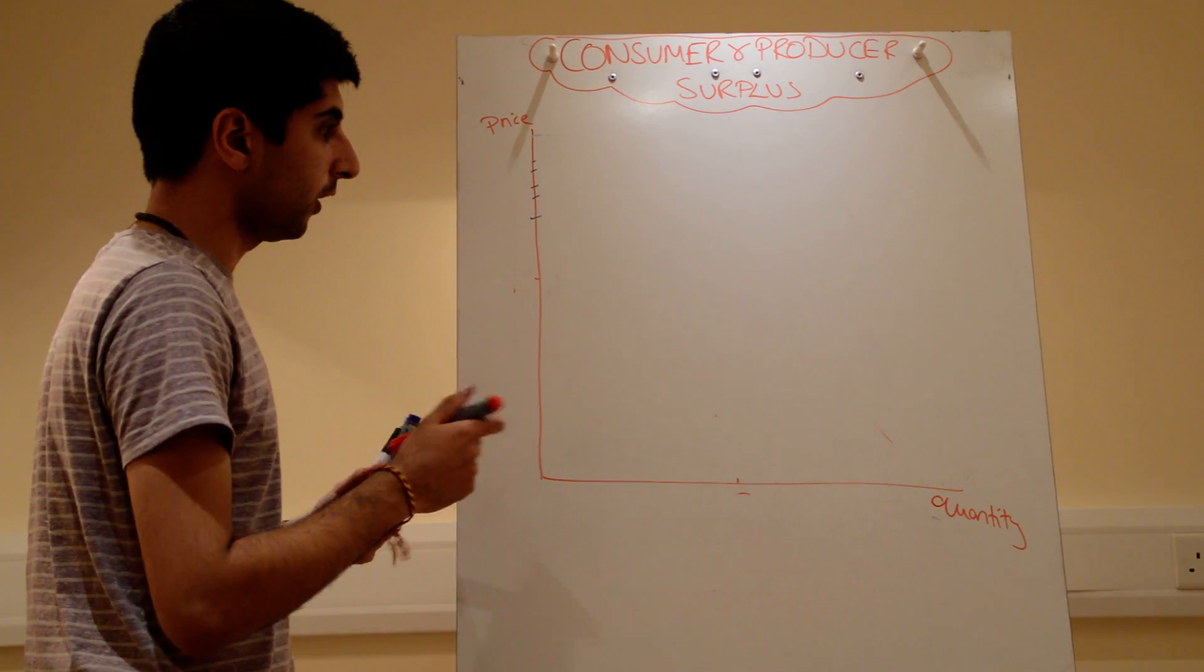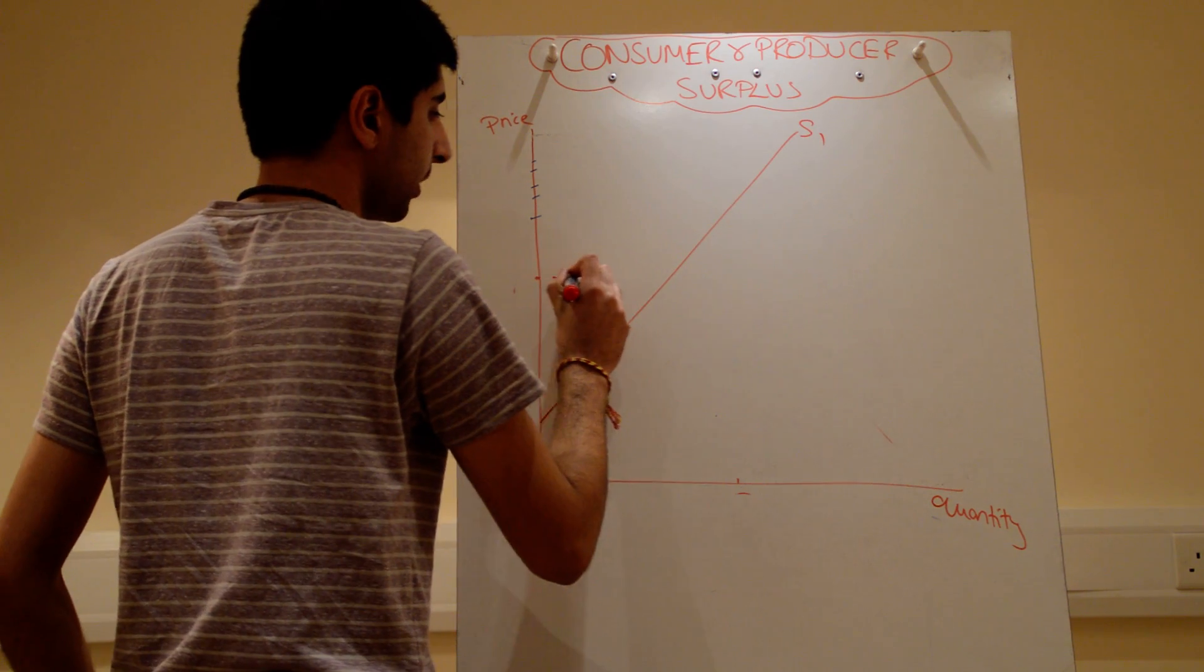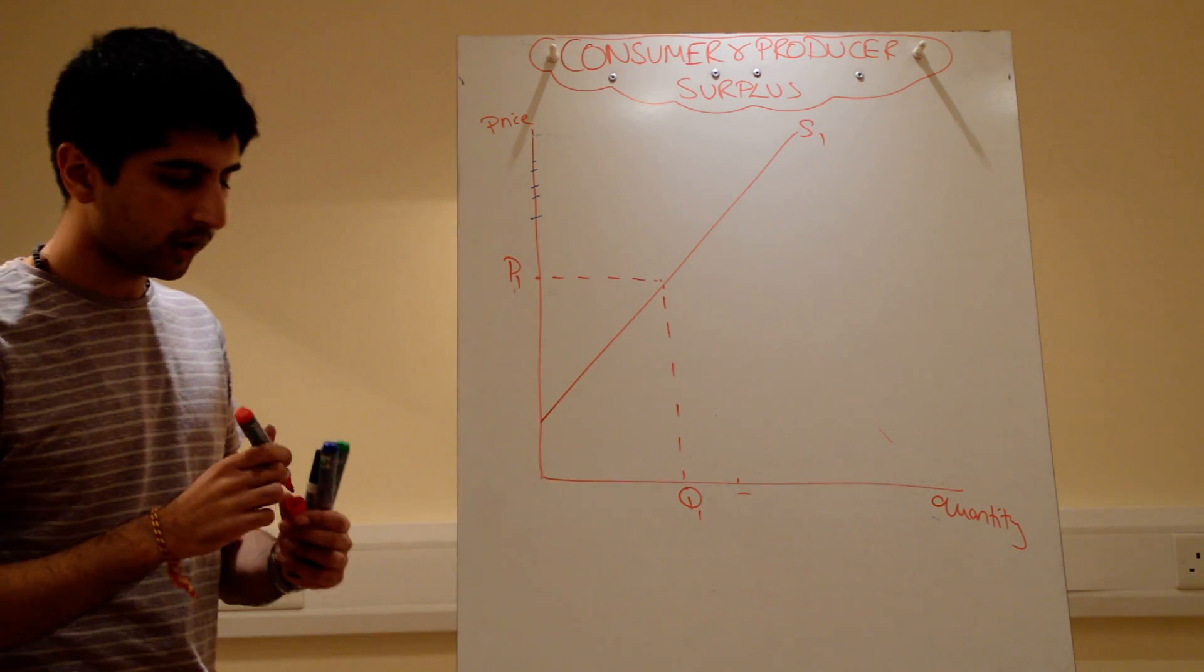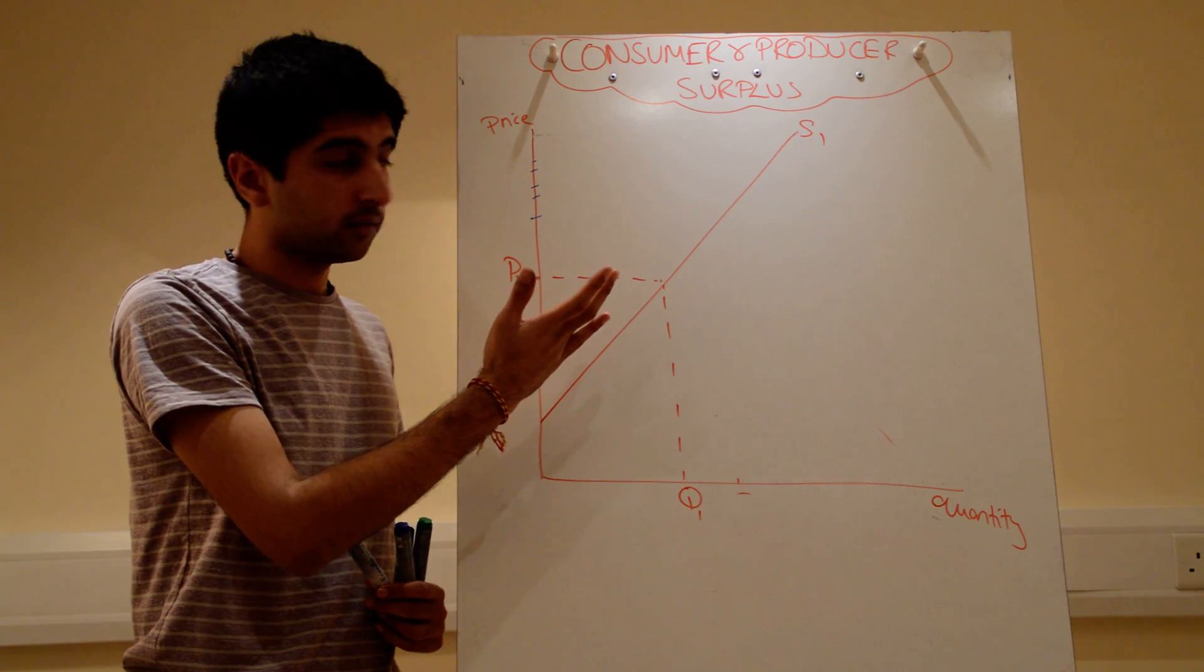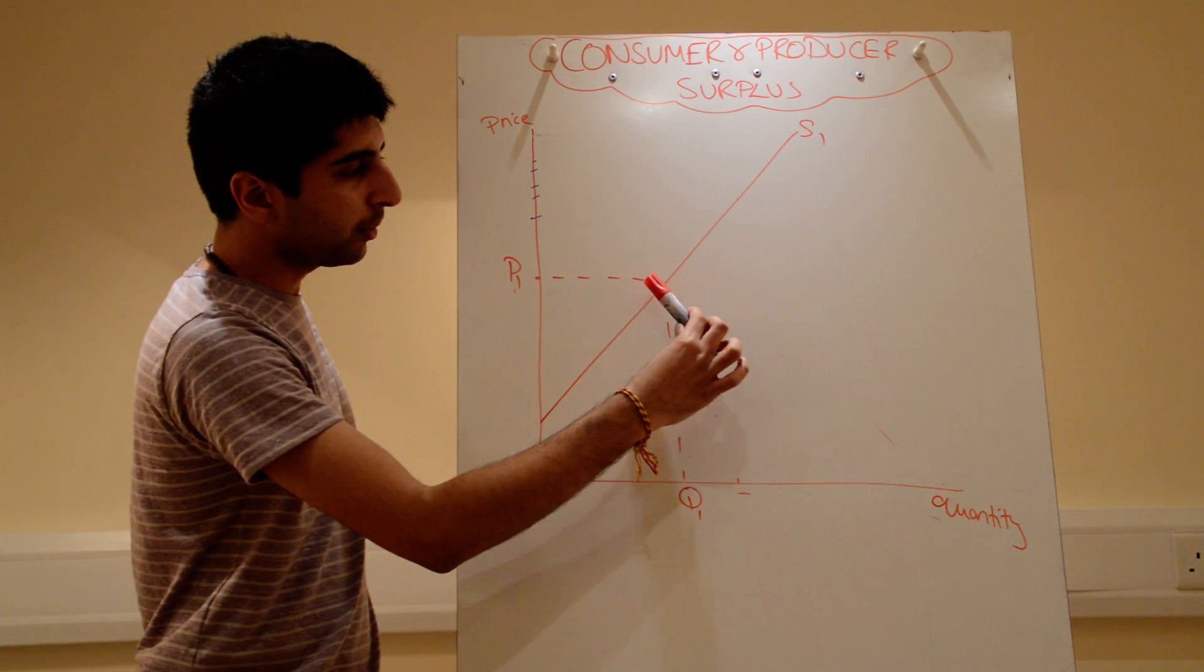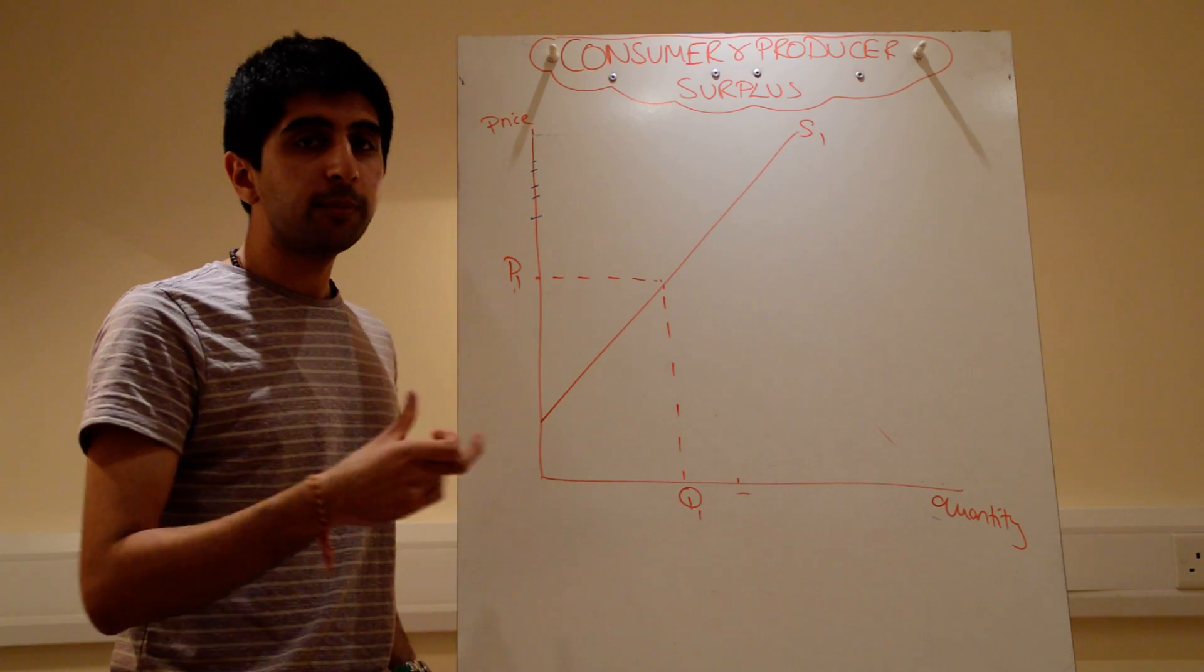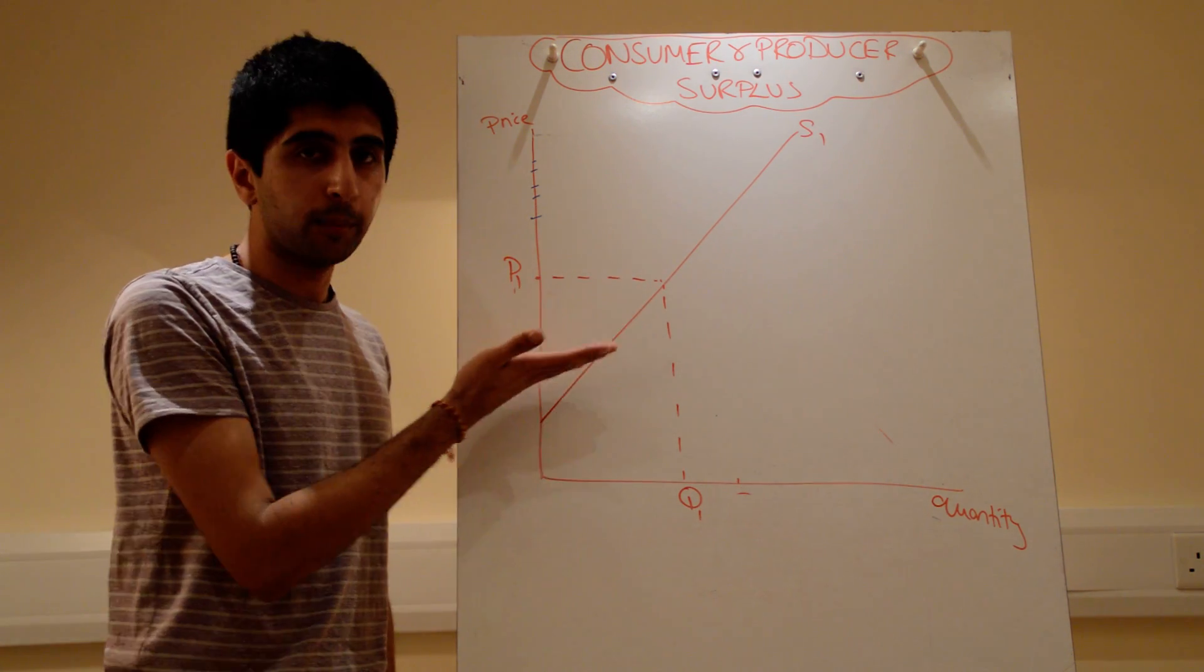So let's draw a supply curve. That looks like that, upward-sloping supply curve. Again, let's pick a price, and let's call that price P1. Quantity supplied at P1 is Q1. Okay, let's look here. There's the price which suppliers are receiving. But in truth, the supply curve goes below that price, which tells you that there are suppliers down here that would have been willing and able to supply this good or service at a lower price.